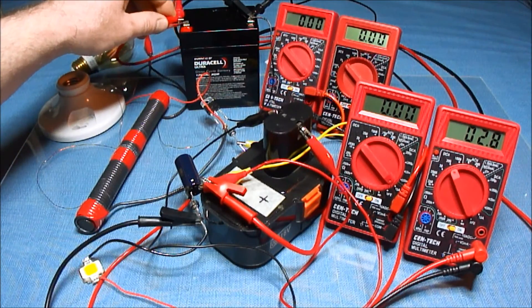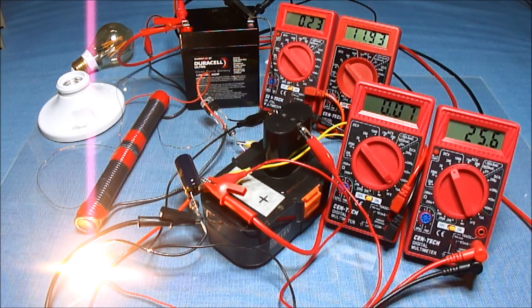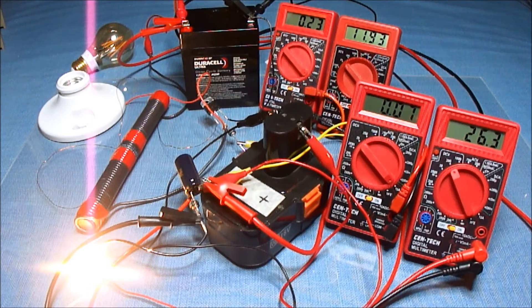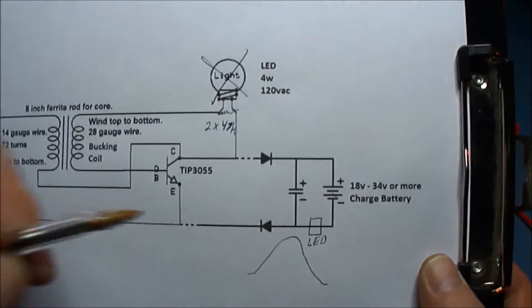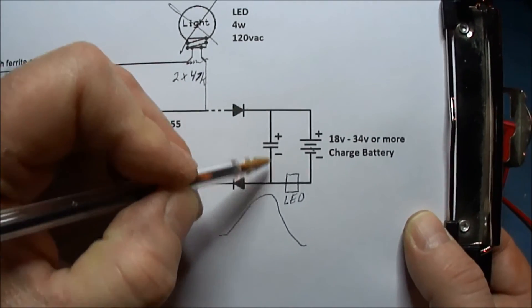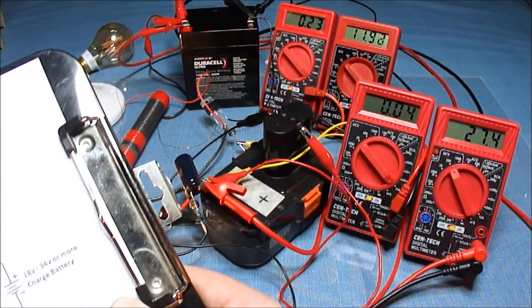So right now I have the voltmeter here across the capacitor. So our energy is flowing in here, charging up this cap to 27.3 volts.